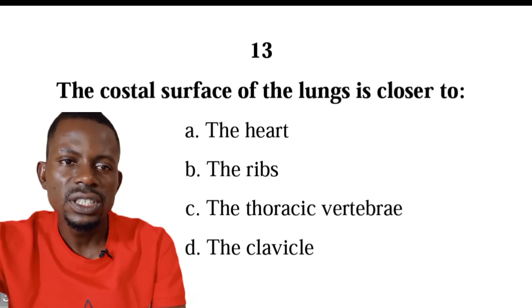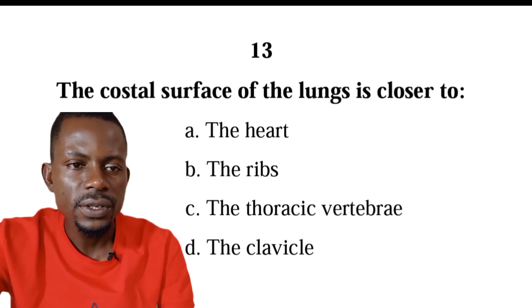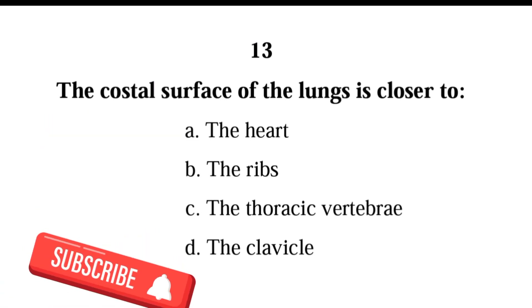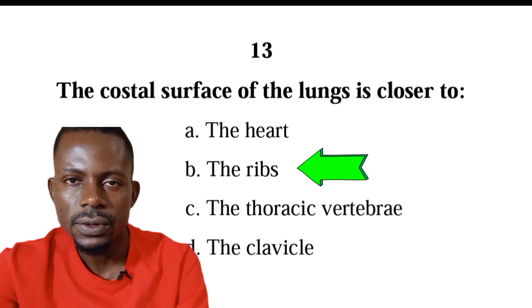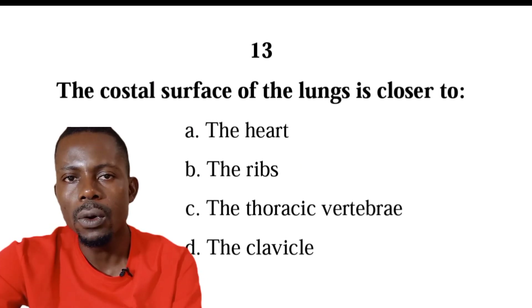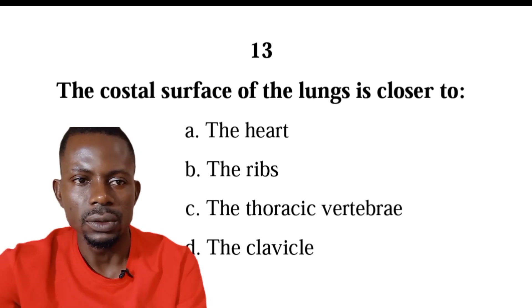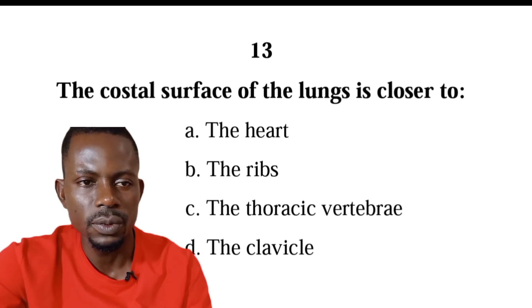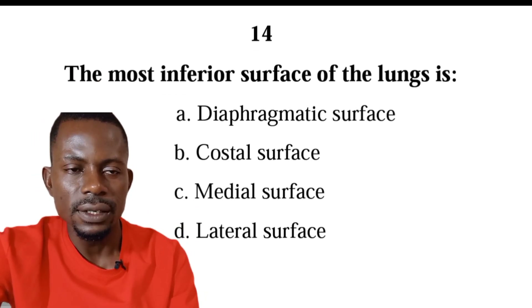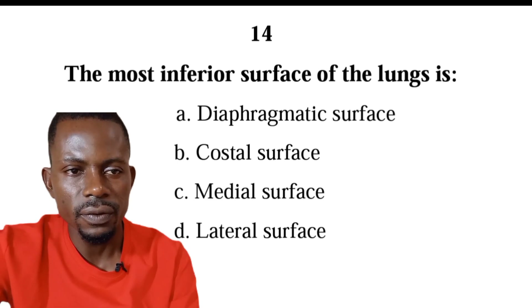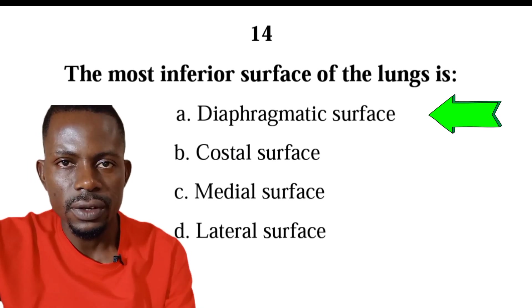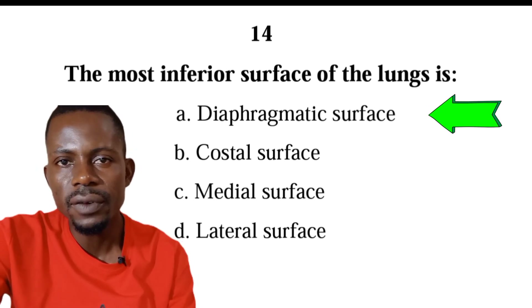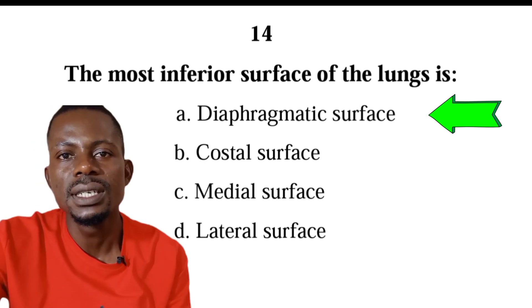Number thirteen: the costal surface of the lungs is closer to the heart, the ribs, the thoracic vertebrae, or the clavicle? The correct answer is B, the ribs. Costal refers to ribs, so anything closer to the ribs is costal. For example, the muscles between the ribs are called intercostal muscles. Number fourteen: the most inferior surface of the lungs is diaphragmatic surface, costal surface, medial surface, or lateral surface? The correct answer is A, diaphragmatic surface. The diaphragm is located below the lung, so the surface facing the diaphragm is the diaphragmatic surface.